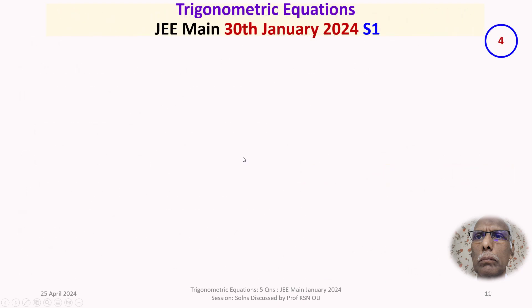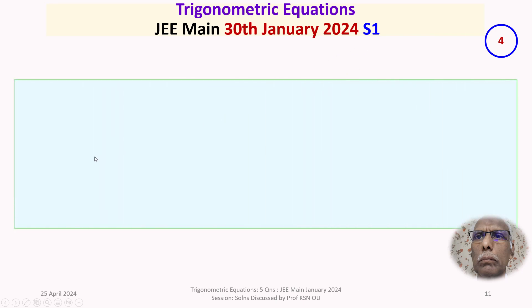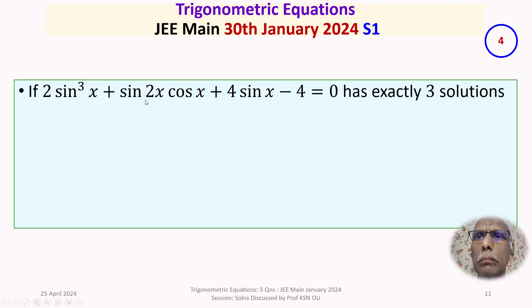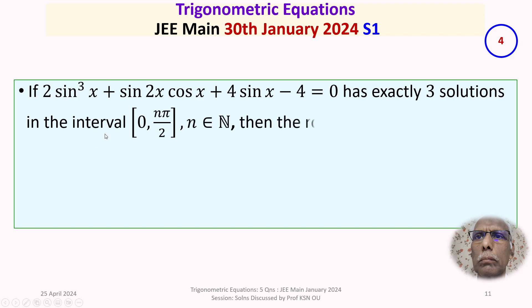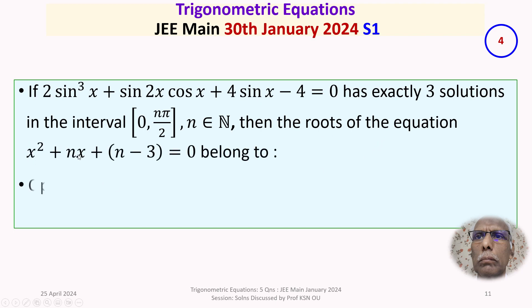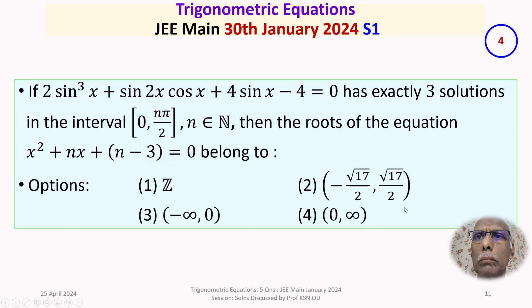The fourth question appeared in the JEE Main exam held on 30th January 2024 in the first shift. If 2sin³x + sin2x·cosx + 4sinx - 4 = 0 has exactly three solutions in the closed interval [0, nπ/2] for the least n ∈ ℕ, then the roots of the equation x² + nx + (n - 3) = 0 belong to — with four options given.